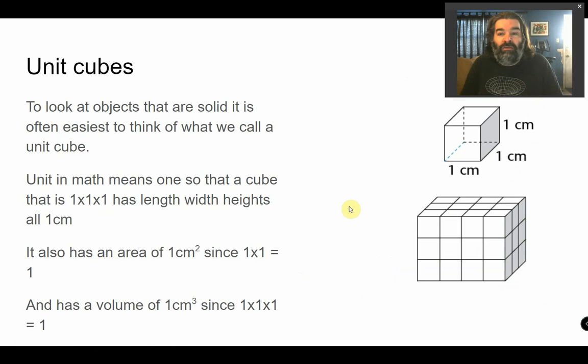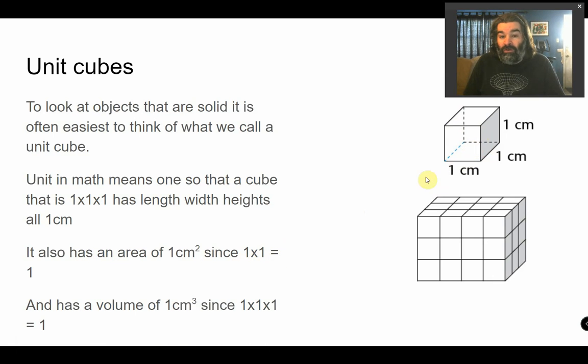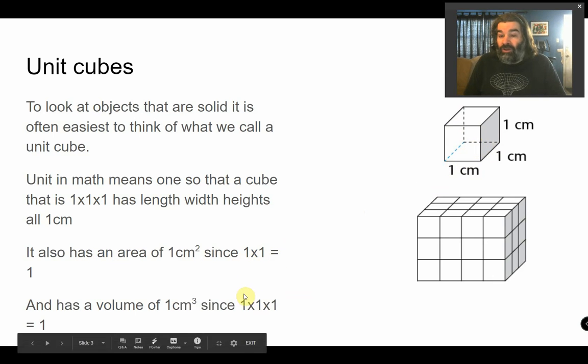One of the tricks we use in math is what we call units. A unit cube is basically just a one by one by one cube. Why is that useful? Well, because one times one stays as one. Your length, width and height are one. Your area length times width is still one, but it'd be one squared. And your volume would actually be one cubed because it would be one times one times one.